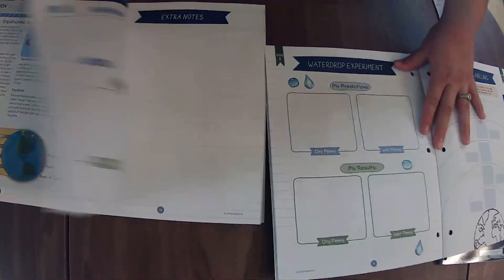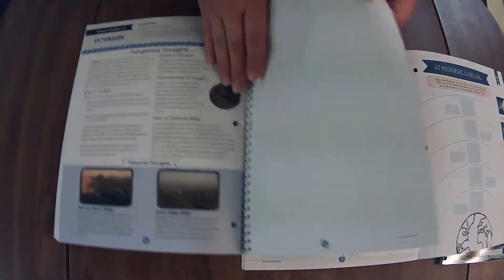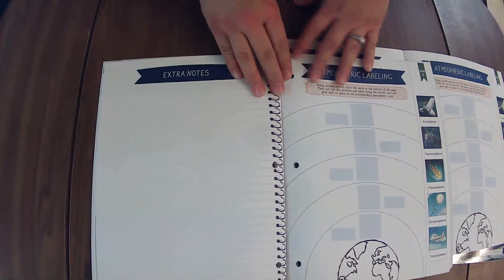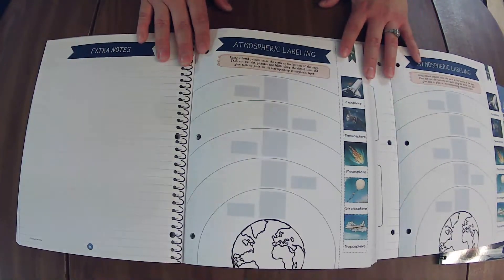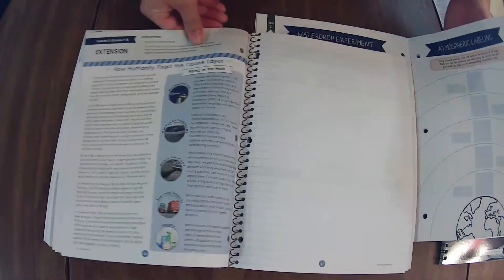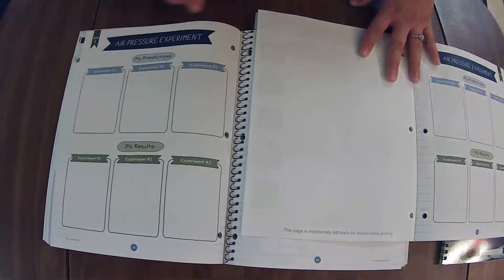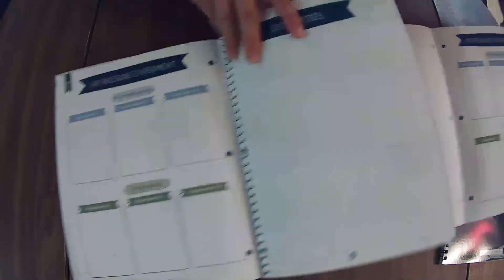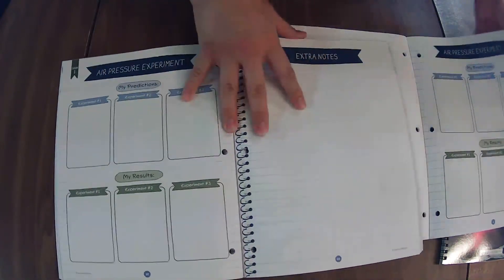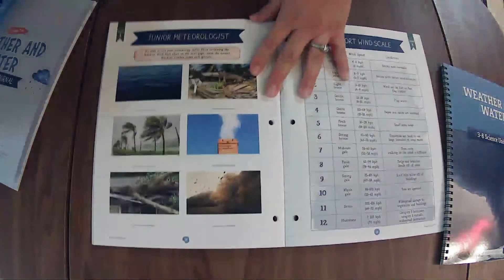Let's see. How Humanity Fixed the Ozone Layer. And here we have the same. So you can kind of go through them and see what is best for your child. Let's finish up the three through six, and then we'll go through the other one after.